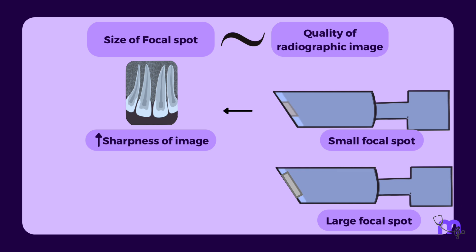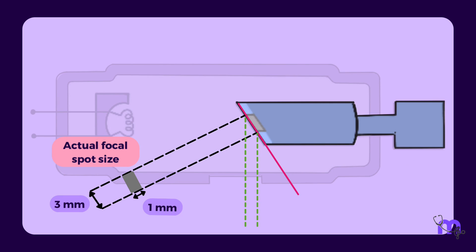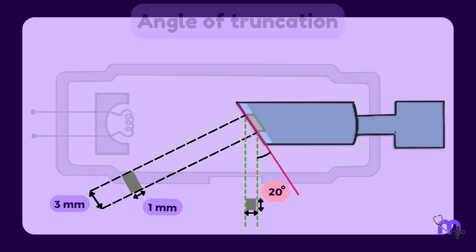However, having a large focal spot also has its advantages because it dissipates more heat. So now how can we achieve a high resolution image without generating much heat? This can be done by positioning the target at a 20 degree angle to the X-ray beam so that we get a reduced effective focal spot size of one by one millimeter while maintaining the actual focal spot of one by three millimeter. This is known as line focus principle, and the 20 degree angulation is known as angle of truncation.